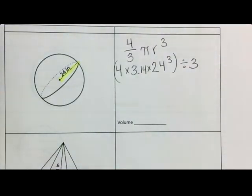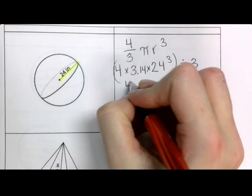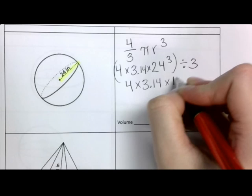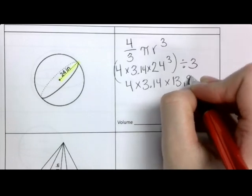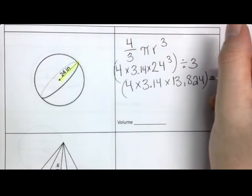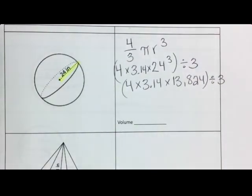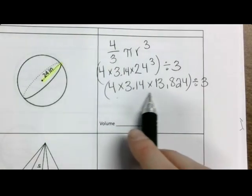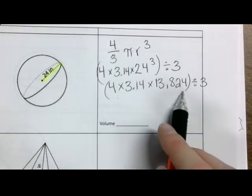So 24 cubed is a big old number. That whole thing is going to be divided by 3. Then you're going to multiply these three numbers together.